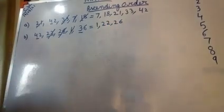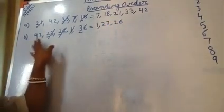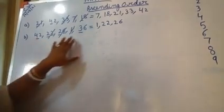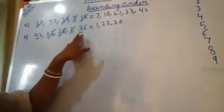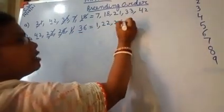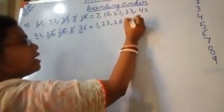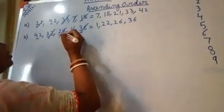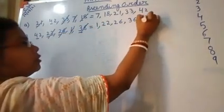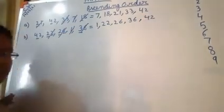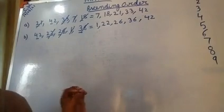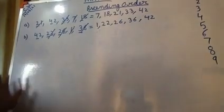Then after twenty-six, we have 42 and 36 left. See the tens place number: here it is 4, here it is 3. After 2, which number will come? 3. So 36 is the next one. After 36, the last number is 42. So the ascending order is: 1, 22, 26, 36, 42. This is a very easy concept — when you do it this way, you don't have any problem.